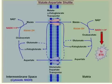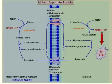There are actually two pathways to transport NADH from the inner membrane space to the mitochondrial matrix. The first one is the malate-aspartate shuttle. The second one is the glycerol-3-phosphate shuttle.